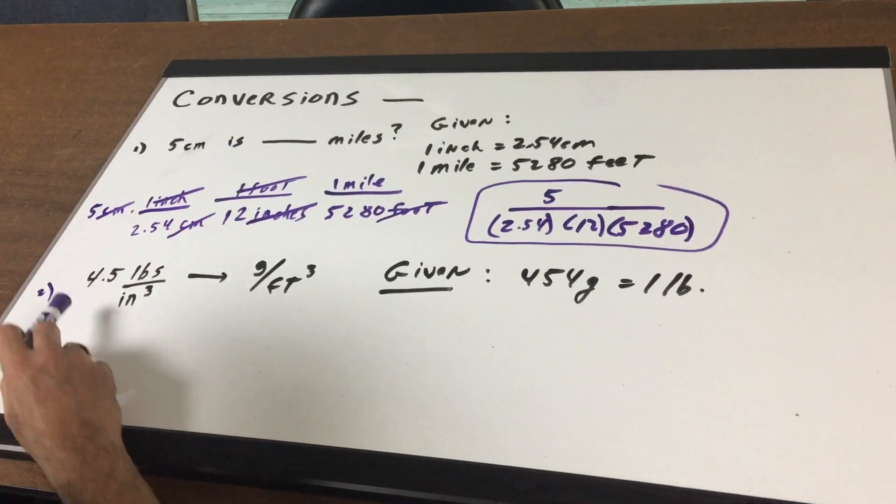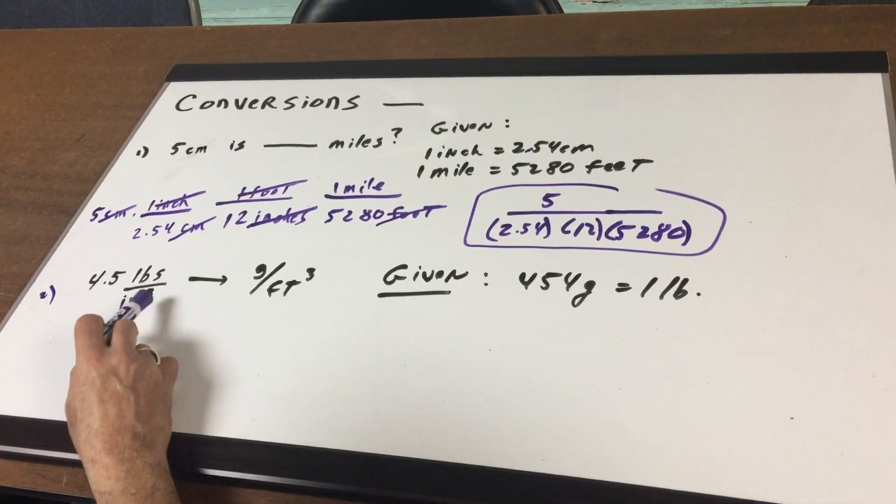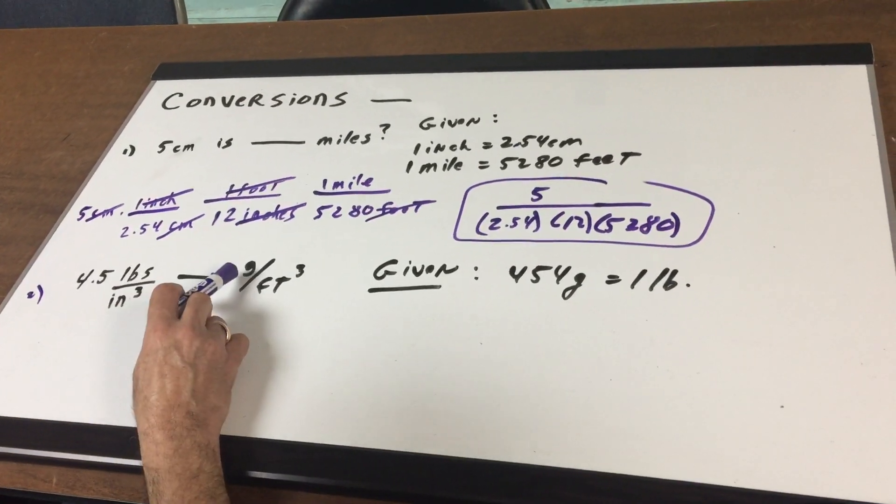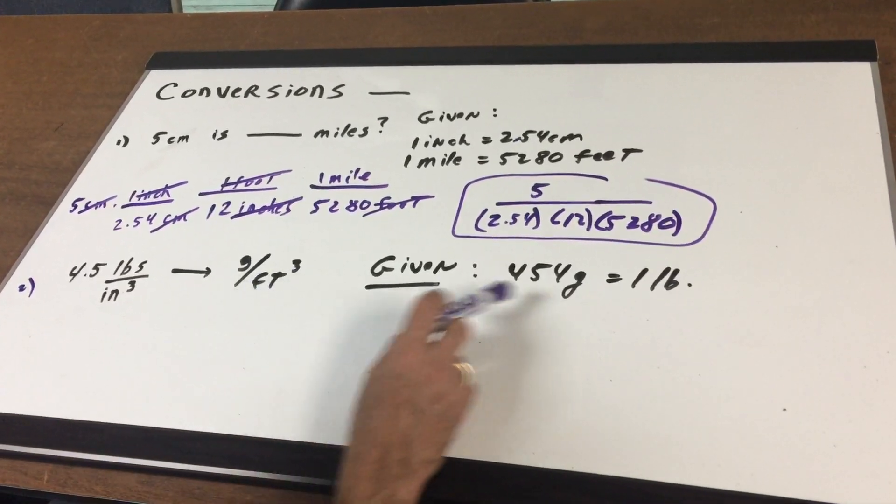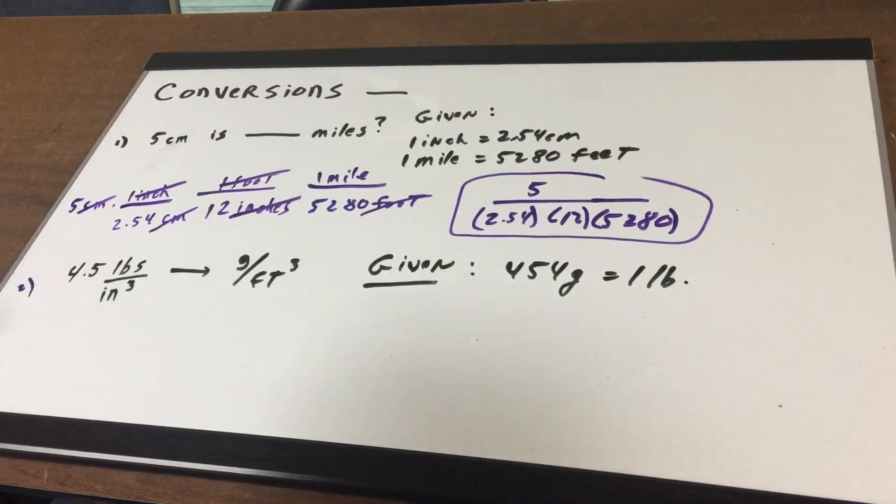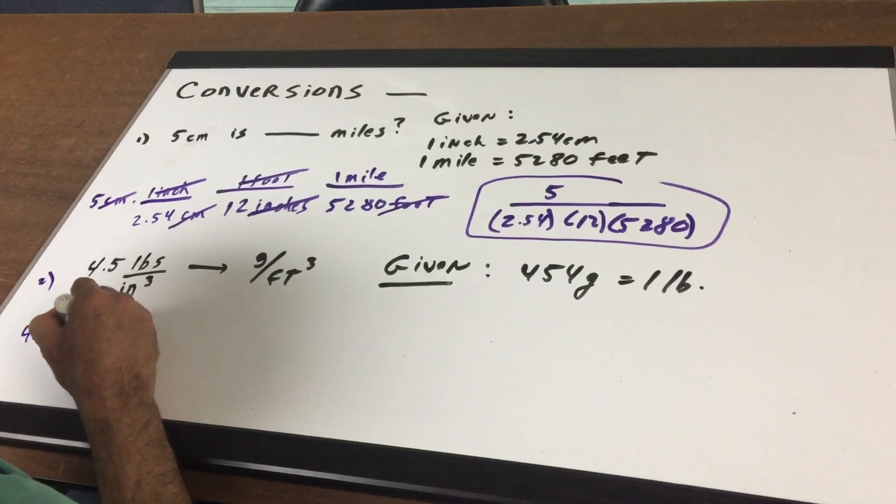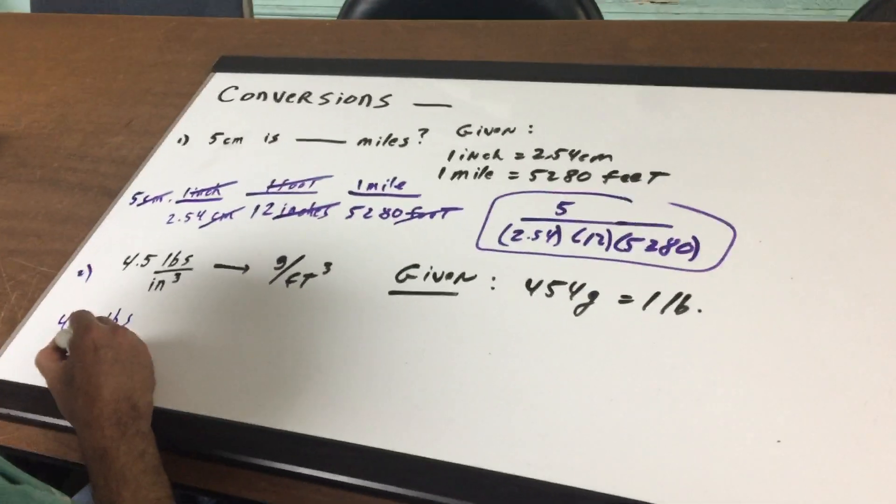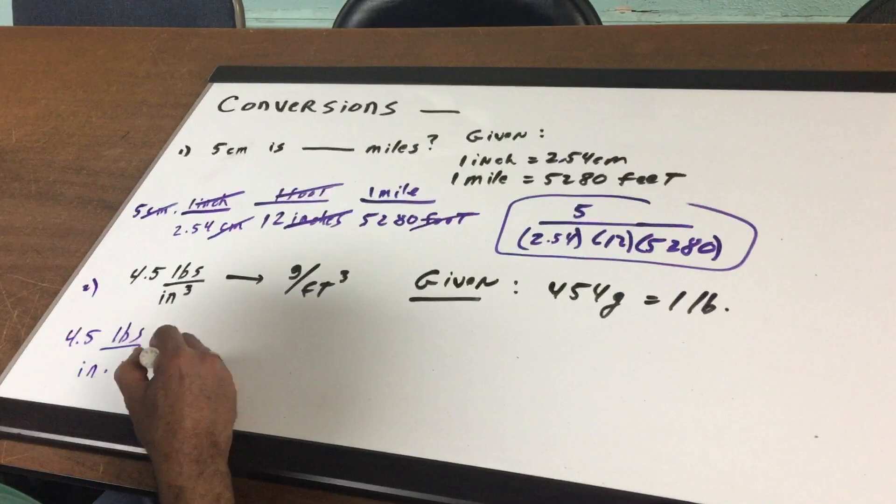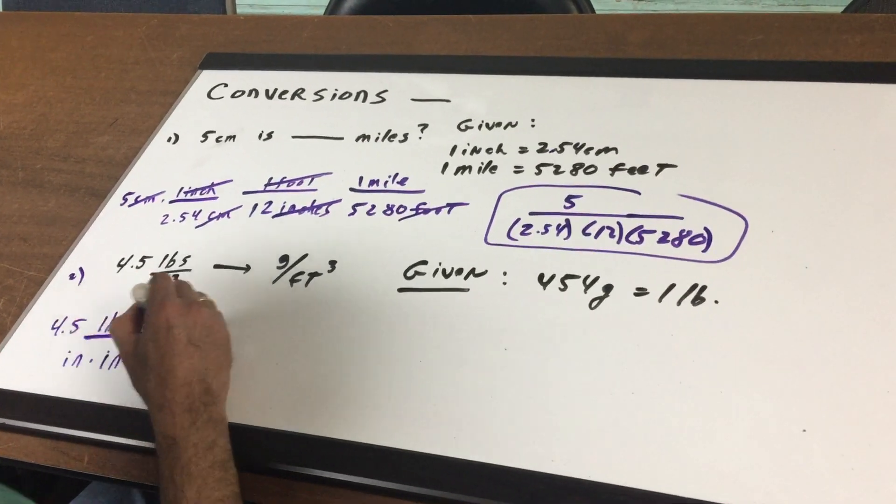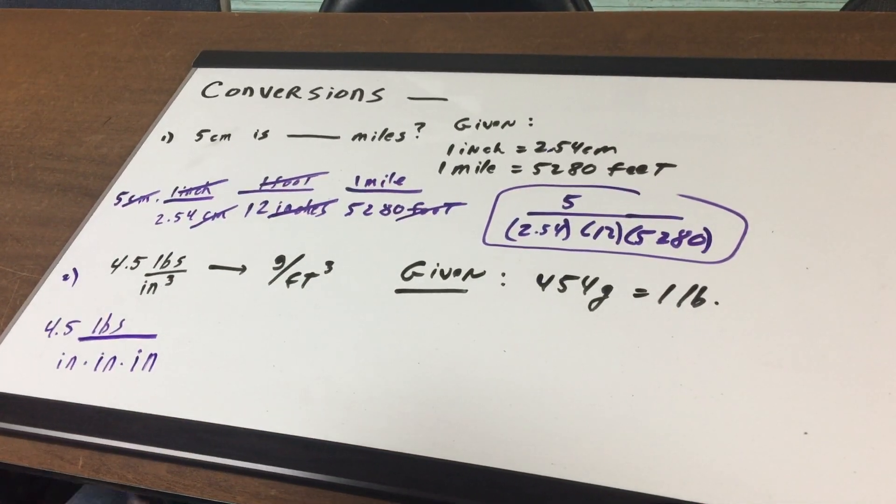We start over, sorry, 4.5 pounds per cubic inch into grams per cubic foot. And I give you 454 grams is a pound. My first move is to write the given 4.5 pounds. The trick I like to teach my students is to write an inch cubed as an inch times an inch times an inch.